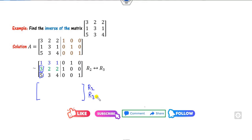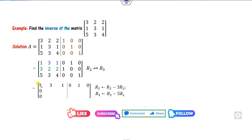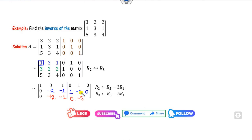After interchanging rows, the purpose is to make the elements below the first pivot zero. For R2: the element with respect to R1 is 3, so apply R2 minus 3R1. This gives minus 2, 6, 2; minus 6; minus 1, 1, minus 3, 0. For R3: apply R3 minus 5R1. Multiply by 5 and subtract: 3 minus 15 = minus 12; 4 minus 5 = minus 1; 0 minus 0 = 0; minus 5 and 1 remain. So we get minus 12, 1, and the remaining entries.